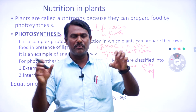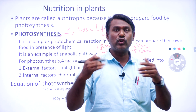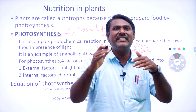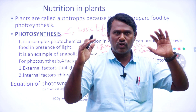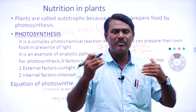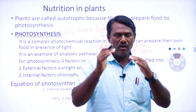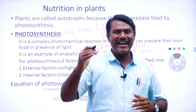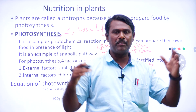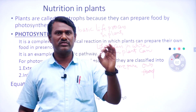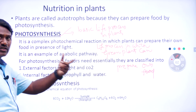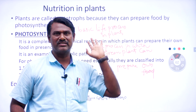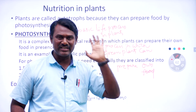Photosynthesis can be defined as a complex photochemical reaction — photochemical meaning light-dependent. Photosynthesis occurs only under the presence of light. It is a complex photochemical reaction in which plants can prepare their own food material in the presence of sunlight. Four factors are essentially required for photosynthesis.